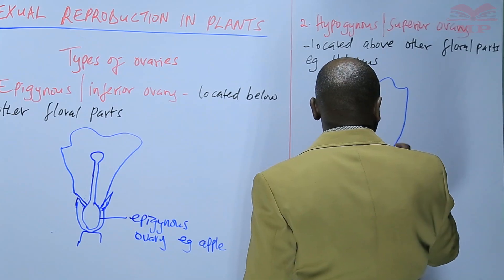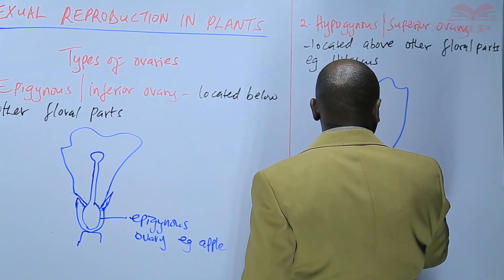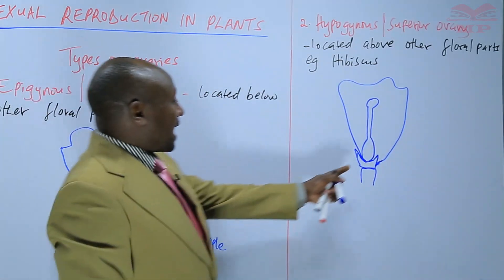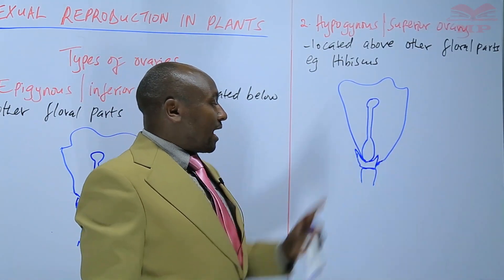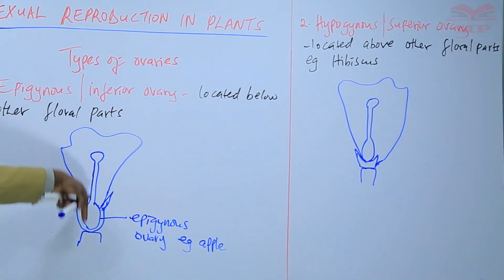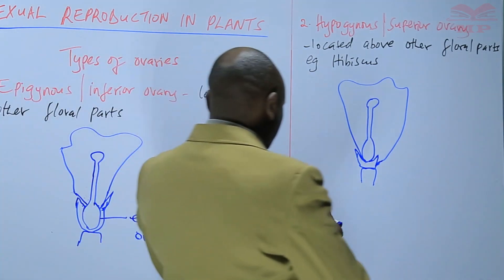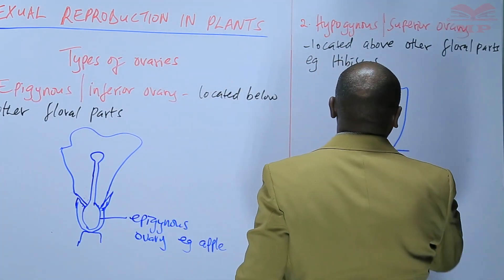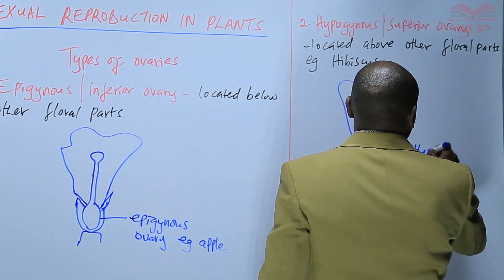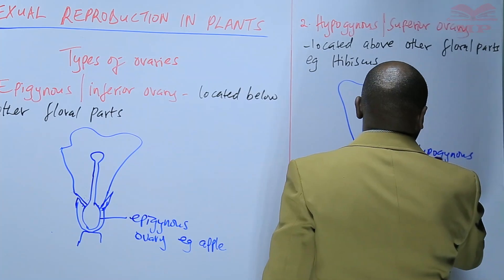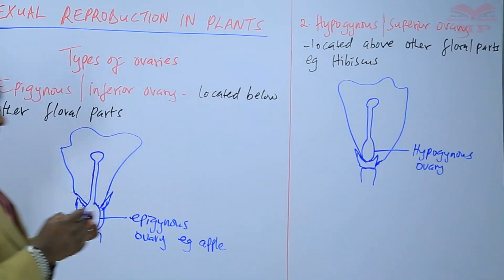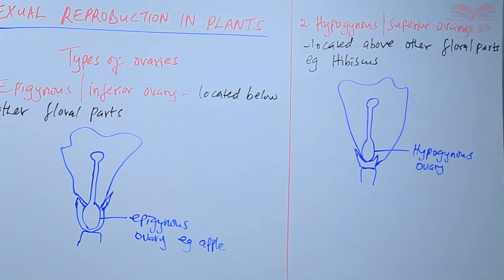So you can see that this ovary is superior. The ovary is at a higher position compared to the calyx and the corolla, as opposed to the epigynous ovary where the ovary is at a lower position. So here we can say that the ovary is superior or hypogynous. That is commonly found in the hibiscus plant.